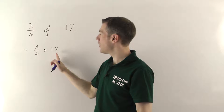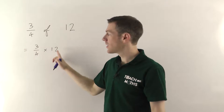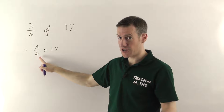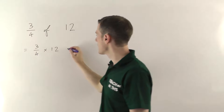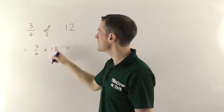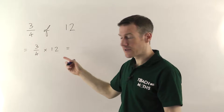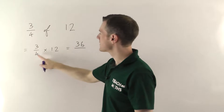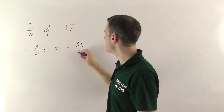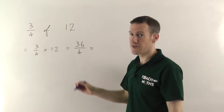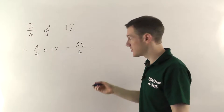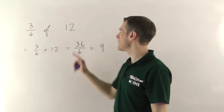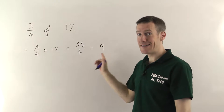If you're multiplying a fraction by a whole number, you times by the top of the fraction and the bottom doesn't change. So in this case, 3 times 12 gives you 36, and that's going to be divided by 4. And 36 divided by 4 gives you 9. So 3 quarters of 12 is 9.